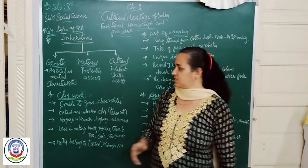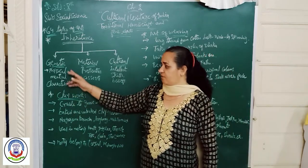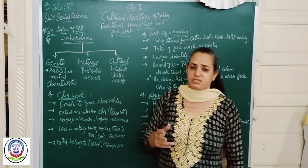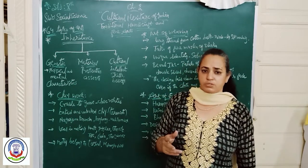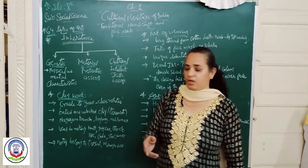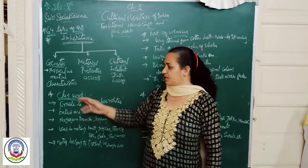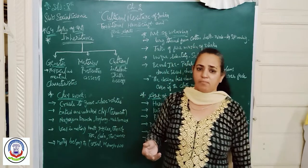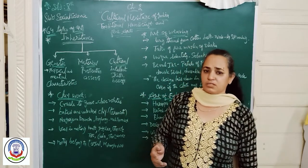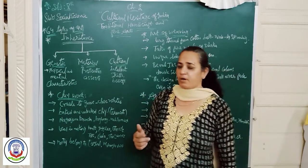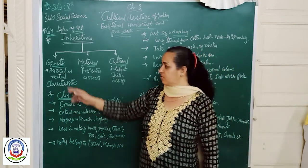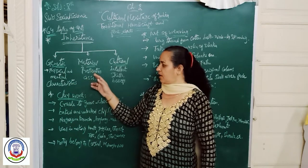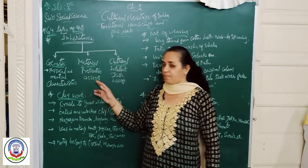All the things which we get from our parents — our features, our eyes, our nose, our characteristics, what they are thinking, how they are working — all these things which we get from our parents is known as genetic inheritance.